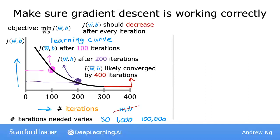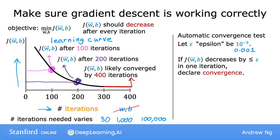Another way to decide when your model is done training is with an automatic convergence test. So let's let epsilon, this here is the Greek alphabet epsilon, let epsilon be a variable representing a small number, such as 0.001 or 10 to the power of negative 3. If the cost j decreases by less than epsilon on one iteration, then you're likely on this flattened part of the curve that you see on the left and you can declare convergence.